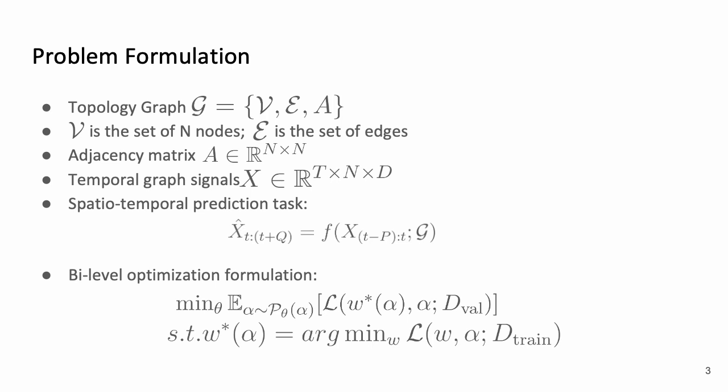In addition, we have a temporal graph signal tensor X of shape T by N by D. Here, T is the total number of steps and D is the number of signals that we record at each time step.